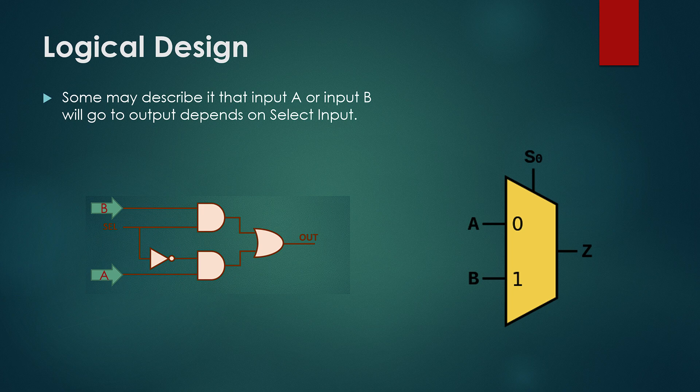Try to understand this: input B and input select are going to the inputs of an AND gate. Then input A and NOT gate of input select are going to the input of another AND gate. And then outputs of both AND gates are going to the input of an OR gate, and output of the OR gate will be the output of our multiplexer. That means our multiplexer structural design would be something like this. Complex, right?